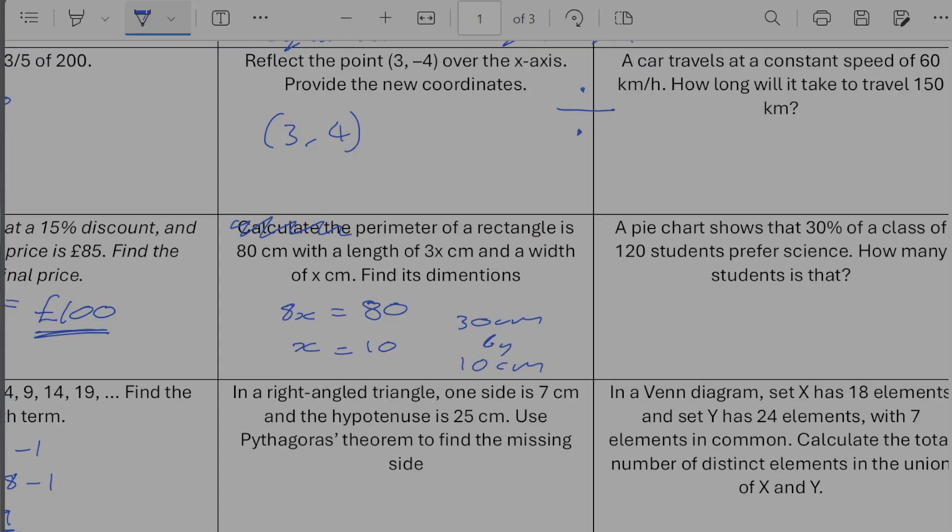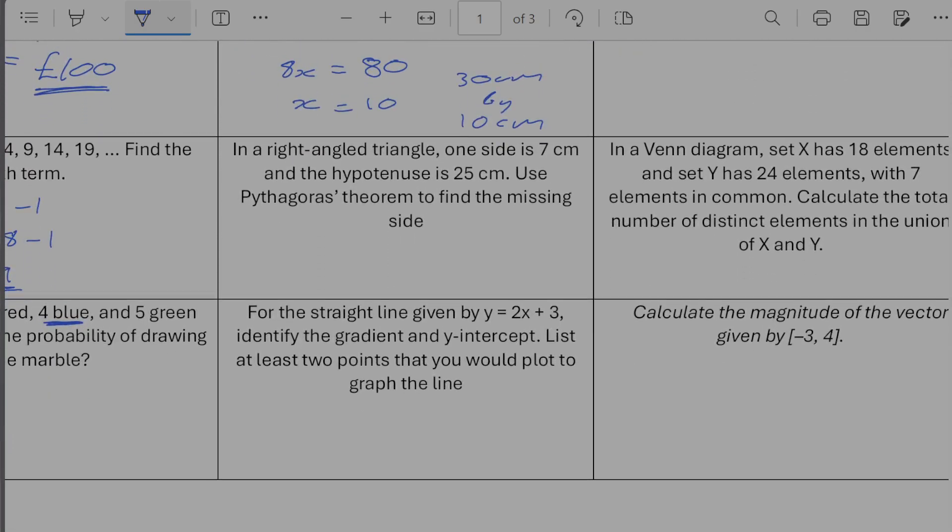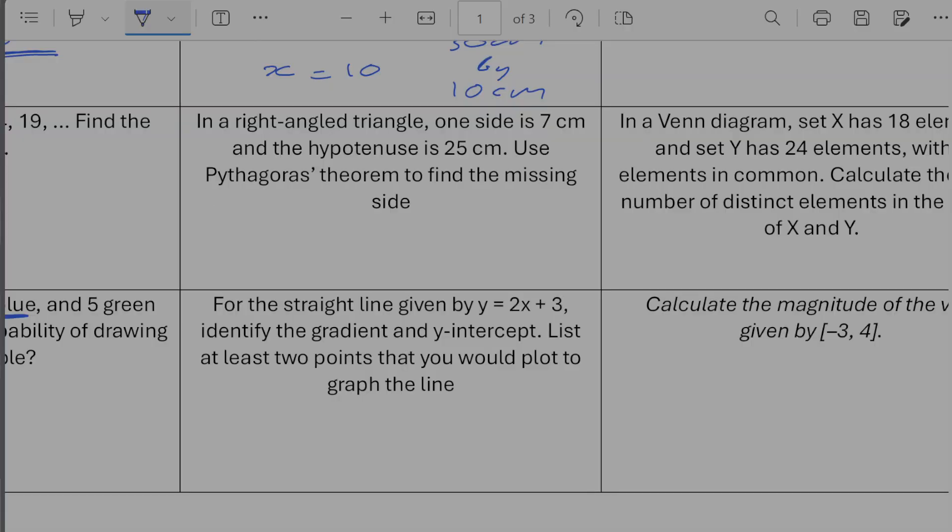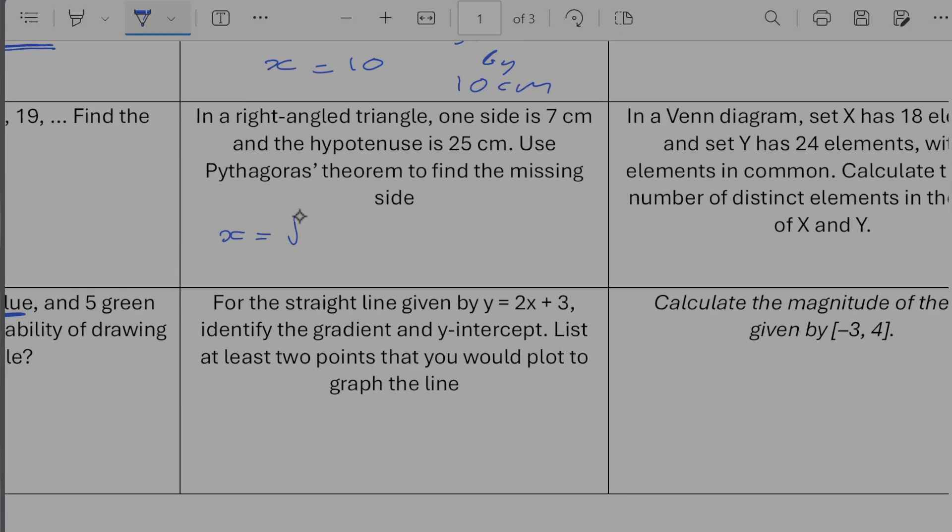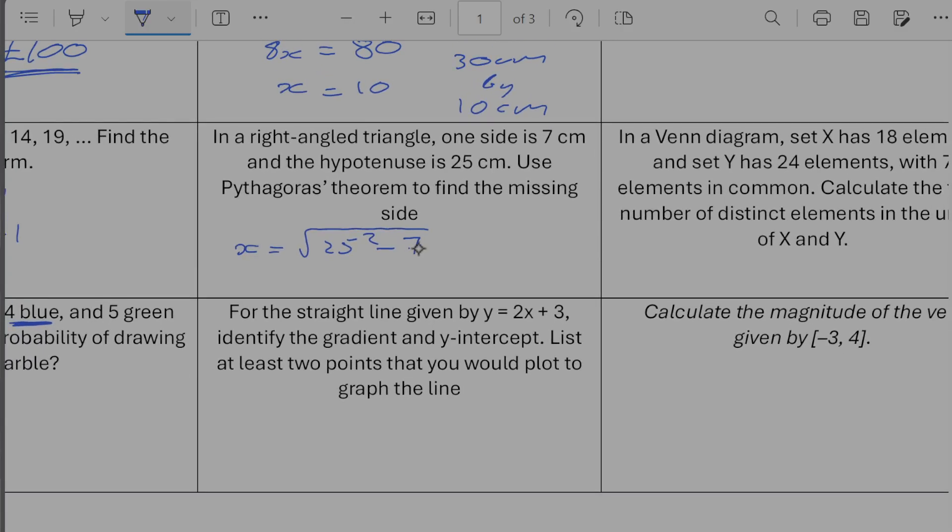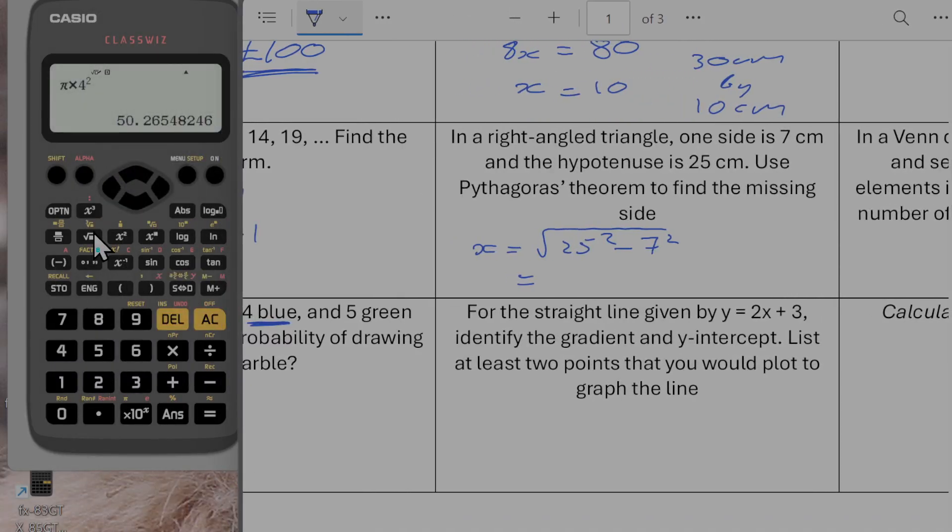In a right angle triangle one side is 7 centimeters and the hypotenuse 25 centimeters. Use Pythagoras theorem to find the missing side. So the missing side is going to be equal to the square root of 25 squared minus 7 squared. So that's going to give me 24 centimeters.